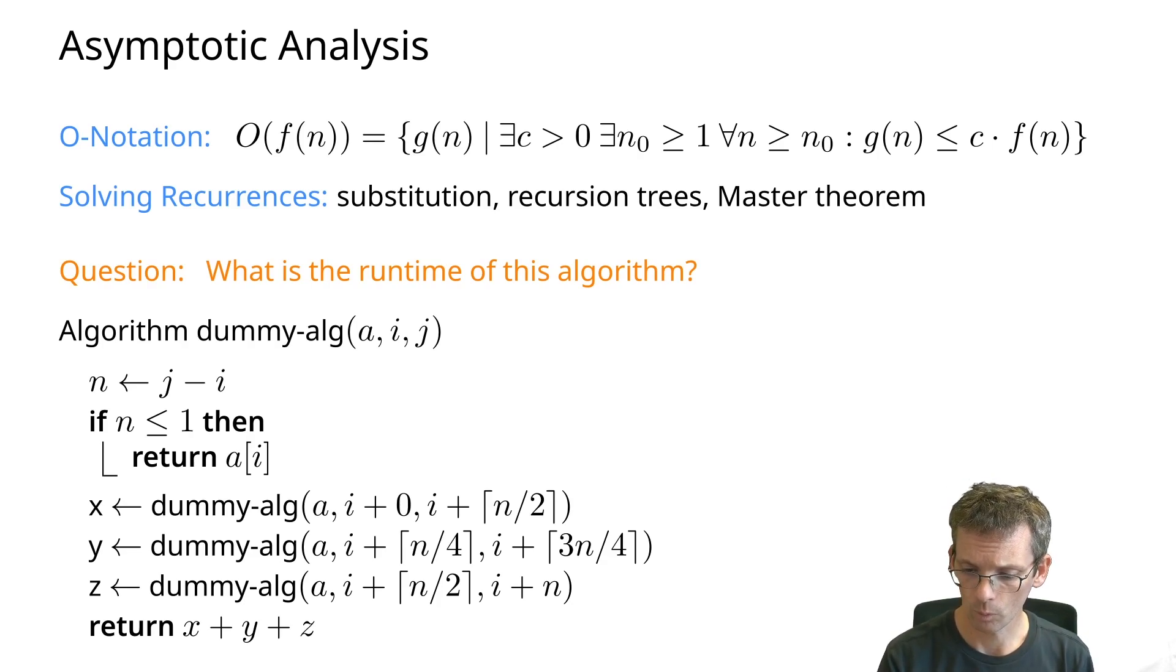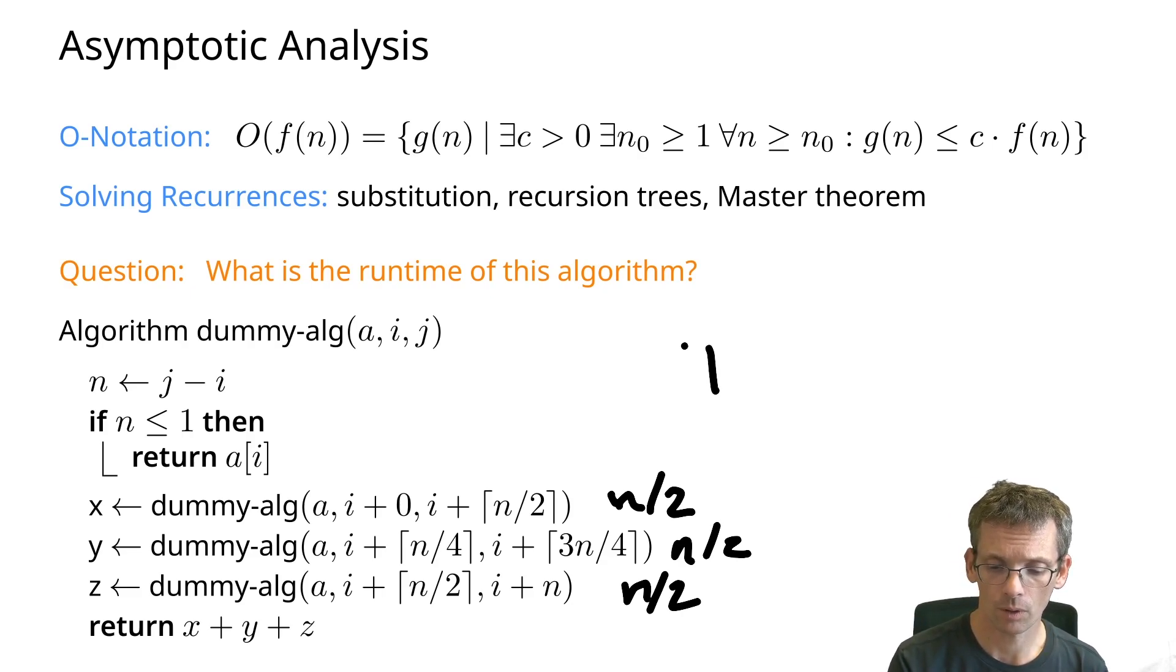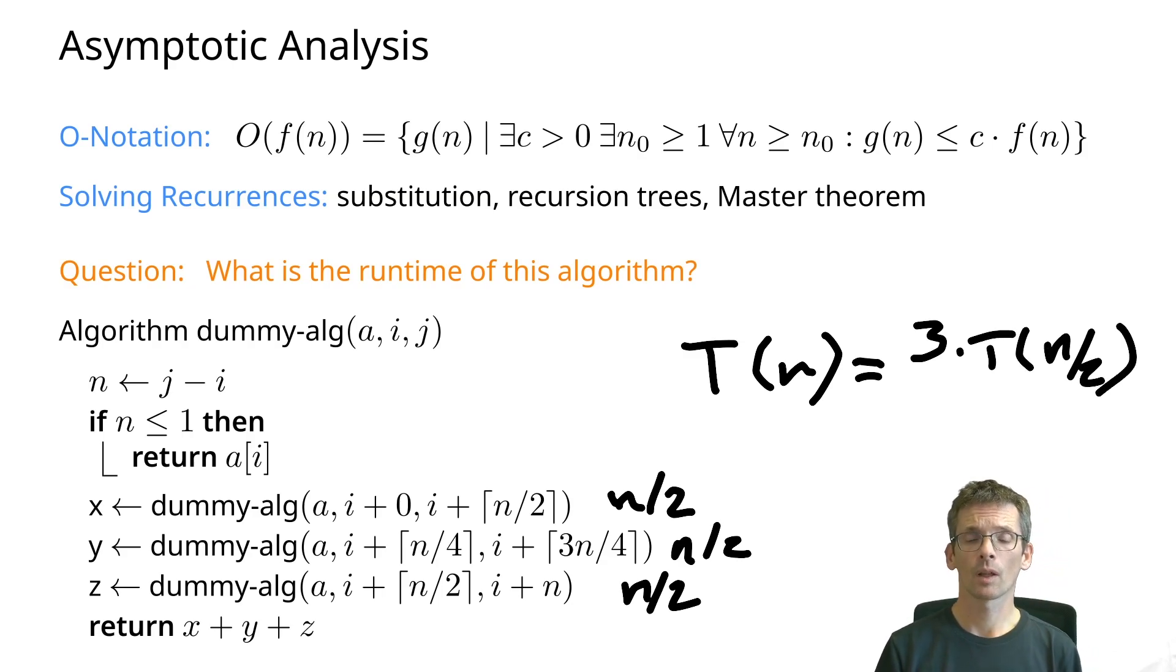For the recurrence, we have three recursive calls, and I already looked at the first one and said it's on an input of half the size. That is actually true for all three recursive calls. So our recurrence will look like: the running time on size n is three times the running time on half the size, plus whatever the algorithm otherwise does in terms of work.